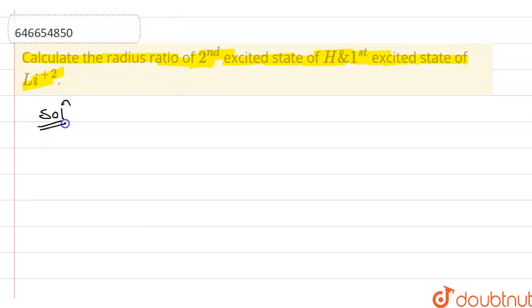So how to solve? Second excited state means n equal to 3. And first excited state means n equal to 2.